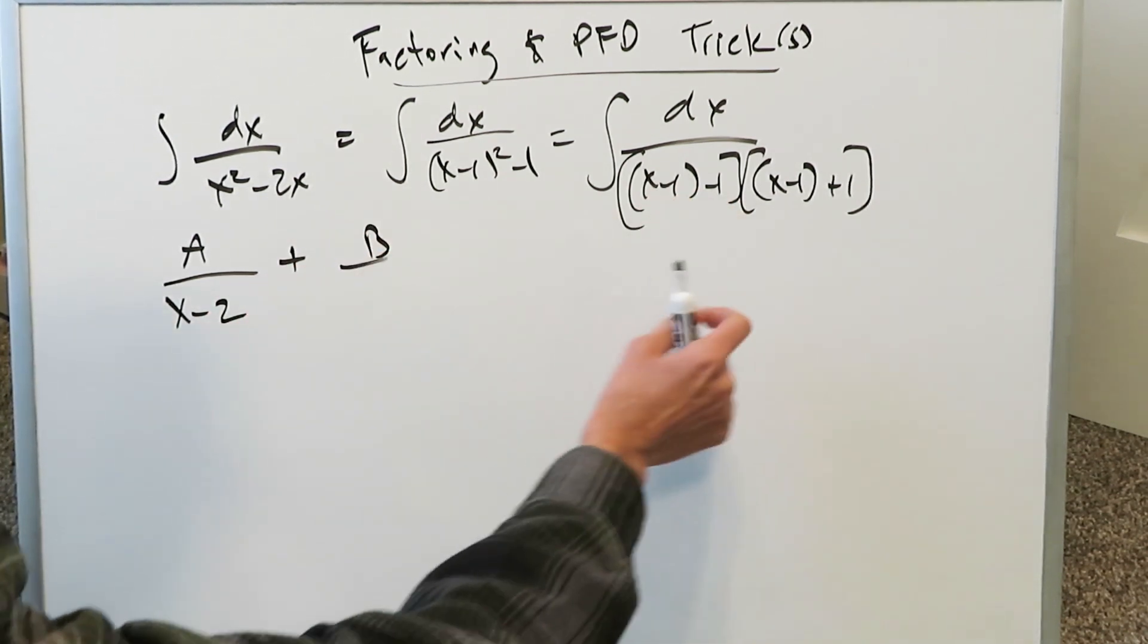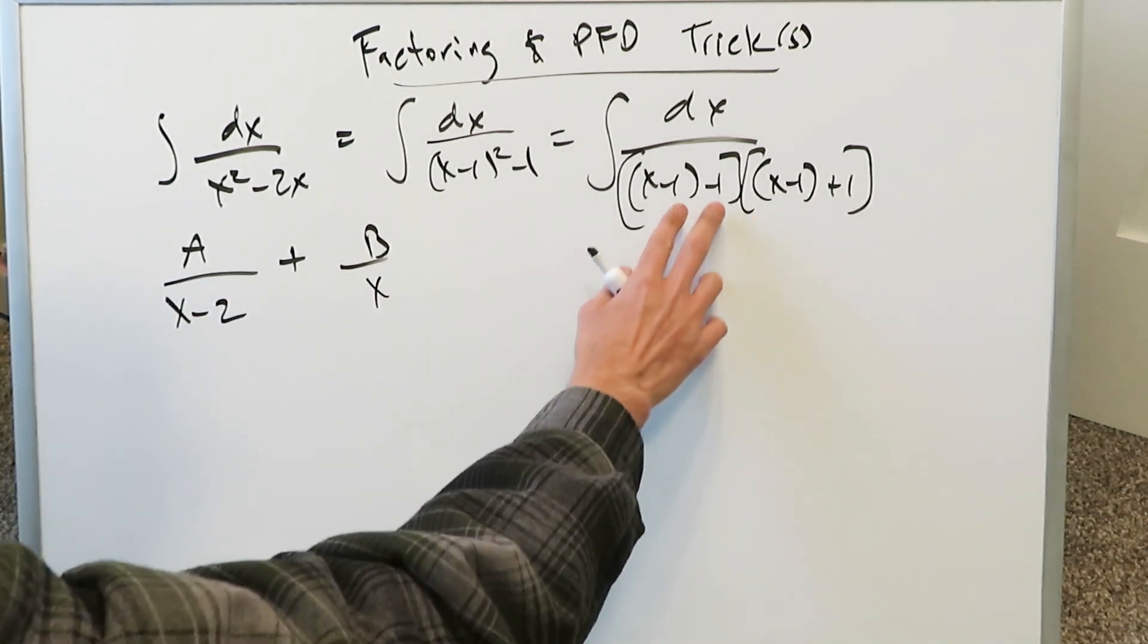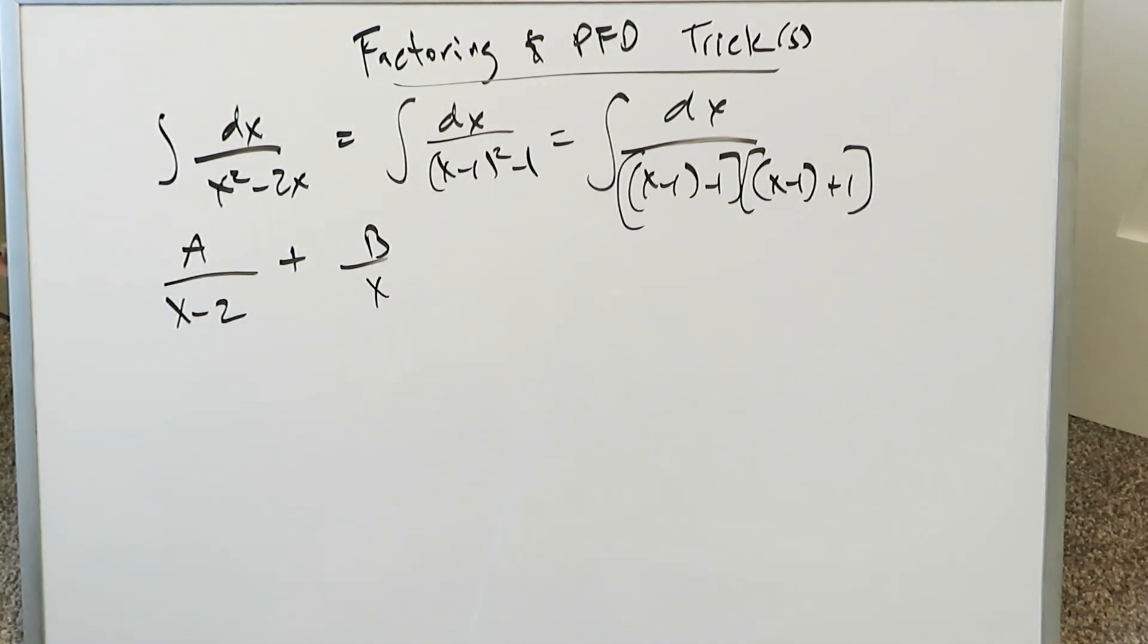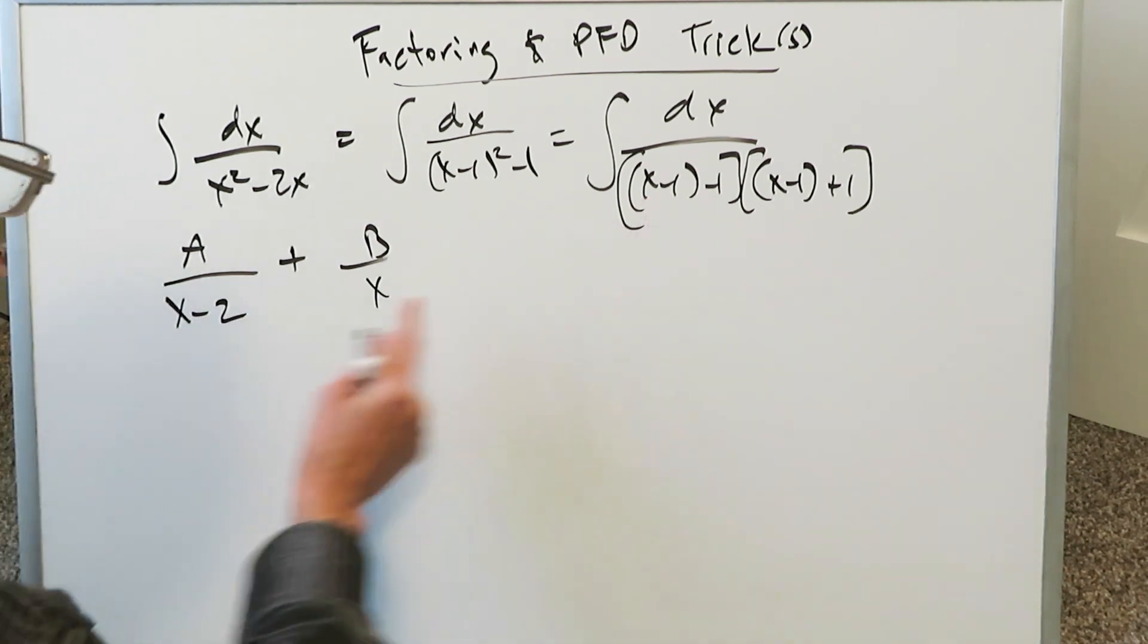The other factor must be this: x minus 1 plus 1, which is just an x. These are reducible linear factors, which have been finally reduced to this.